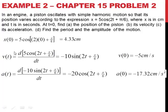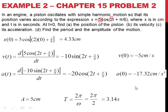Part d asks for the period and amplitude of the motion. The coefficient 5 is our amplitude, so amplitude equals 5 centimeters. Omega equals 2, so plugging into T equals 2π over ω gives T equals 3.14 seconds. Hopefully you found these problems relatively easy, because they will get a bit harder, but you should have the basics down.